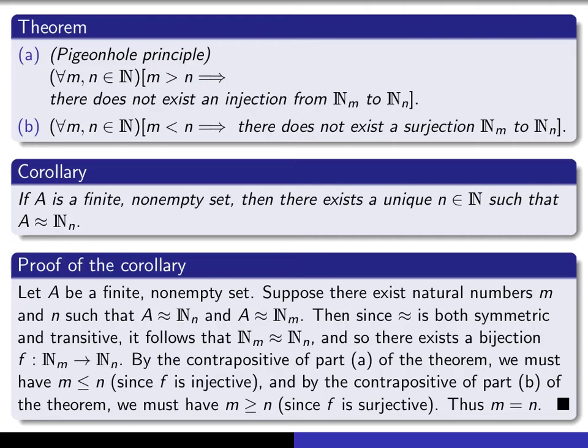So since we've got this bijection, it is in particular an injection, and therefore m must be less than or equal to n.